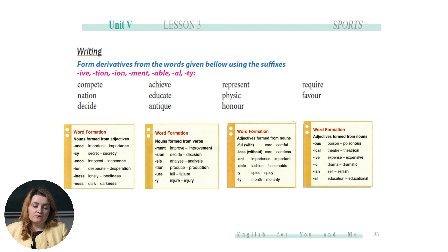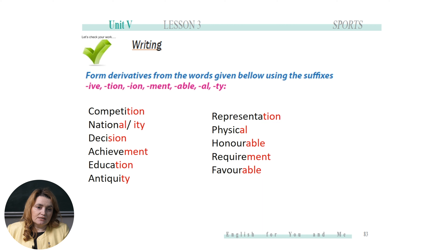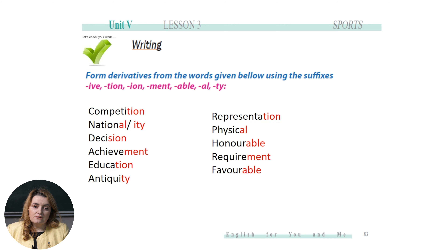Alright everyone, let's check together. Form derivatives from the words given below using the suffixes. We have: competition, national or nationality, decision, achievement, education, antiquity, representation, physical, honorable — remember, honorable, silent H — requirement, favorable. If you have the same answers, good job everyone.